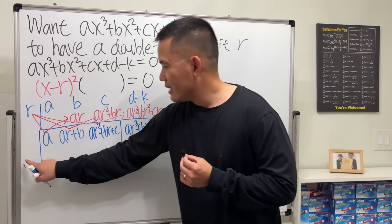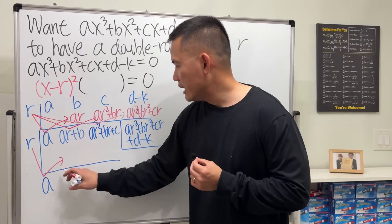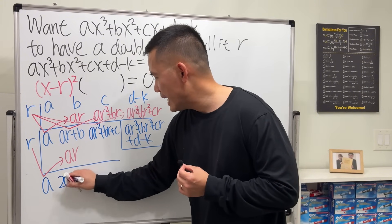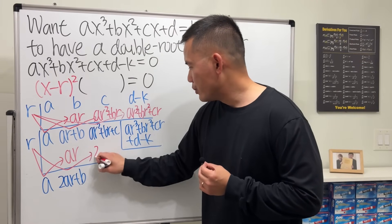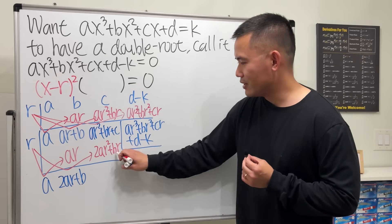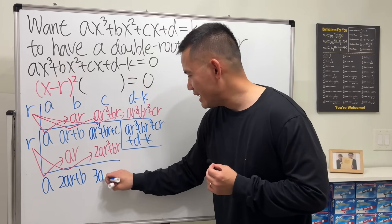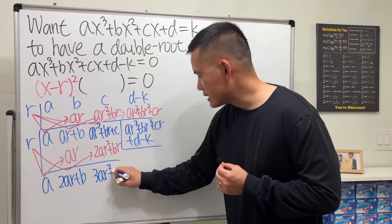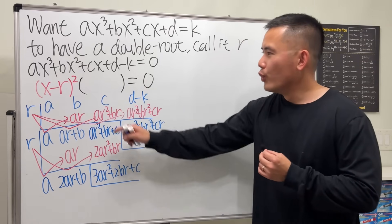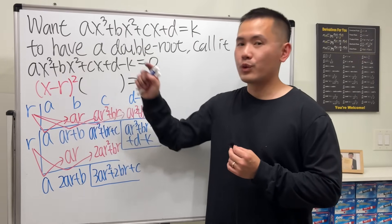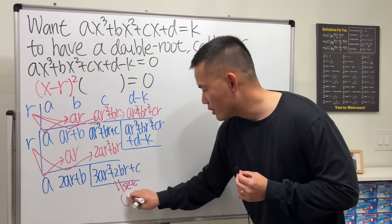Now check this out. We have r on the outside again. Put a here and multiply to get ar, then add to get 2ar plus b. Do it again: multiply to get 2ar squared plus br. Add them up: ar squared plus 2ar squared is 3ar squared; br plus br is 2br; plus c. So 3ar squared plus 2br plus c is the remainder when dividing by (x minus r) squared — and for a double root, this remainder must equal zero.